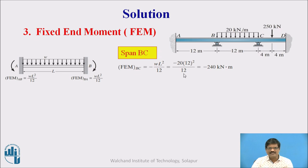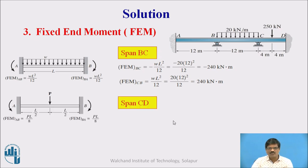However for BC we have the loading present and it is a typical case of fixed beam subjected to UDL. So we have a standard case and the fixed end moments are WL square by 12. Accordingly FEM BC is minus because it is anti-clockwise. And FEM CB is plus since it is clockwise. So the magnitudes are minus 240 and plus 240. Then for CD also we determine the fixed end moment. The fixed end moments are PL by 8. Therefore CD is minus 250 and DC is plus 250.